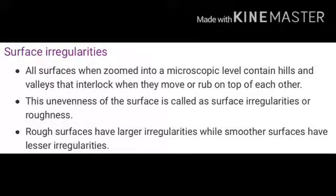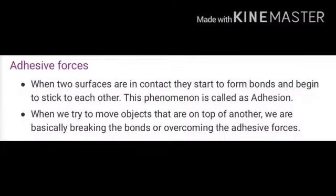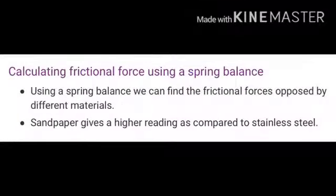There is more friction between rough surfaces compared to smooth surfaces. Regarding adhesive forces — when two surfaces are in contact, they start to form bonds and begin to stick to each other; this phenomenon is called adhesion. When we try to move an object on top of another, we are basically breaking the bonds — overcoming the adhesive forces.